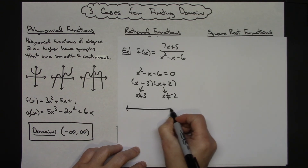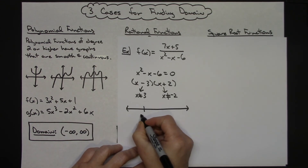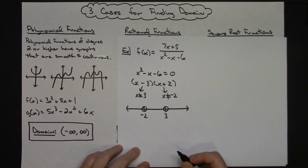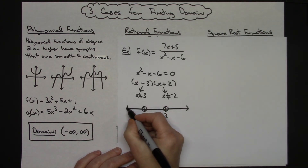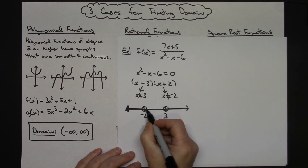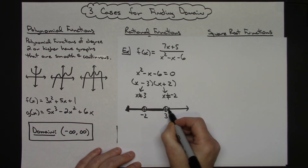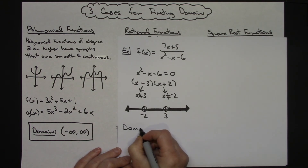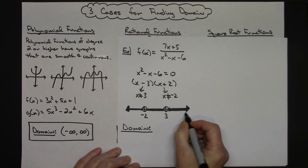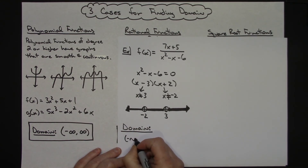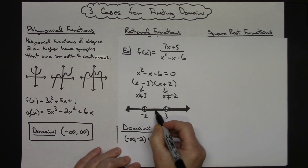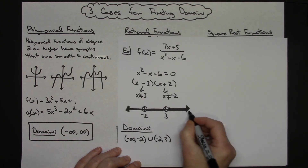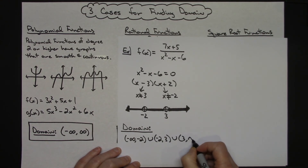Now picture this on a number line: negative 2 and 3 are the exclusions, but those are the only numbers that will make that denominator zero. So all values less than negative 2, between negative 2 and 3, and greater than 3 are fine for the domain. Writing the domain in interval notation: negative infinity to negative 2, union negative 2 to 3, union 3 to positive infinity — using open parentheses since both exclusions are not included.